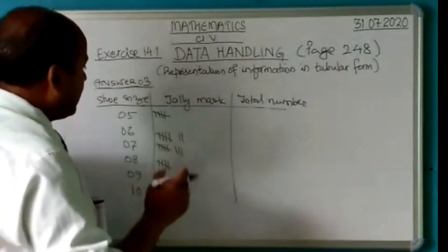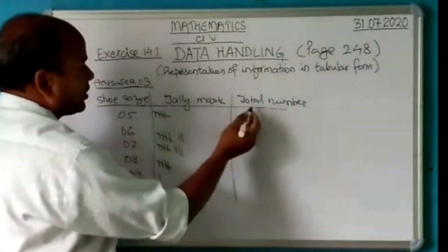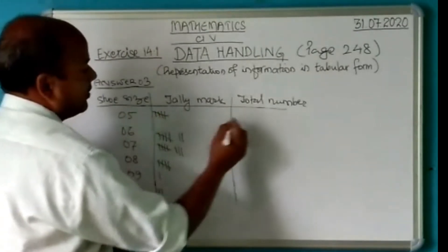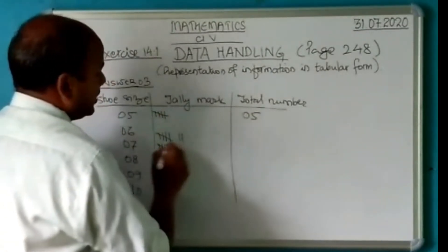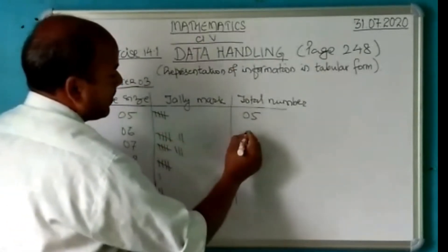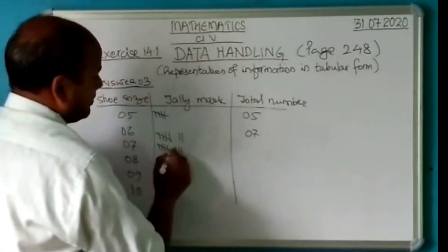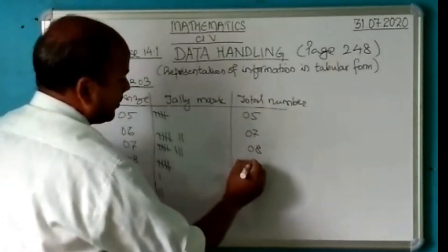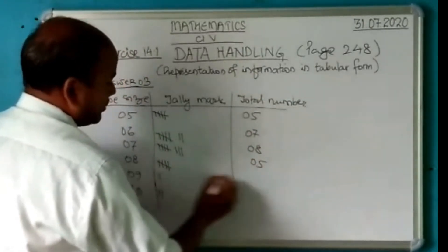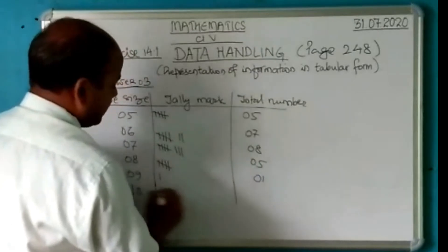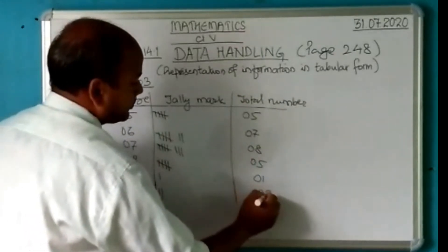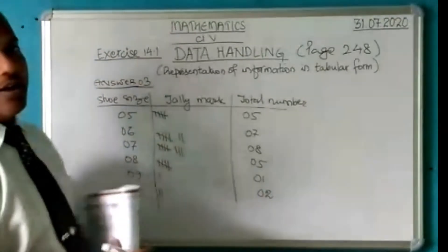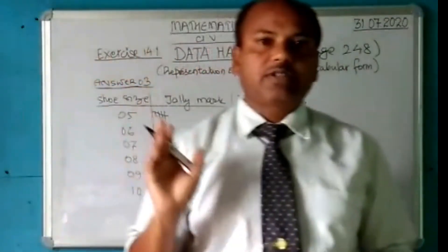Now let's see how many in total wear each size. For size five shoes — here is one five, then another five, then another five, and one more — that gives us a count for size five. Let's tabulate each shoe size from the data.